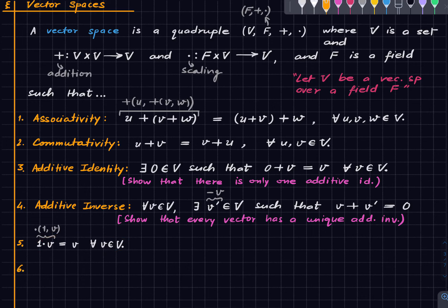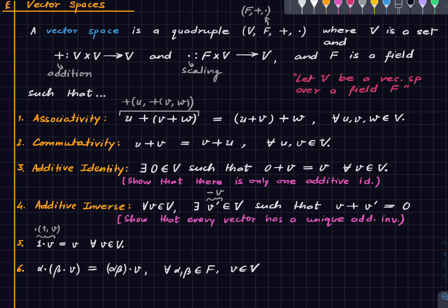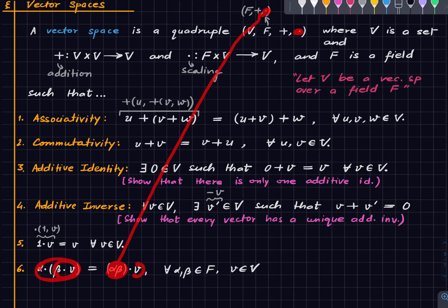The sixth axiom is a sort of associativity for scaling: α·(β·v) = (αβ)·v for all field elements α, β and all vectors v. Here the product αβ is taken using the field multiplication, since you can't use the vector scaling dot to multiply two field elements. This says scaling by β first and then by α is the same as scaling by the field product αβ.